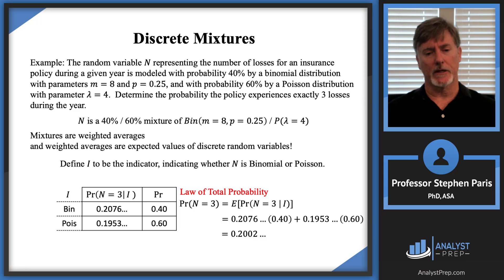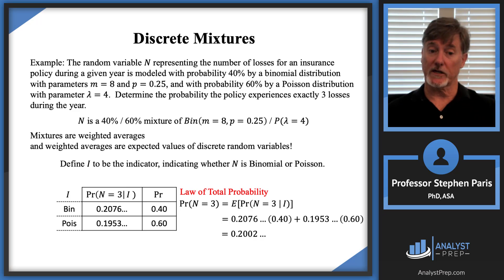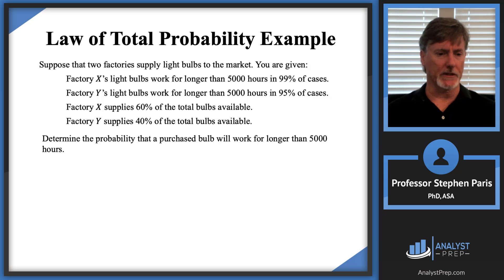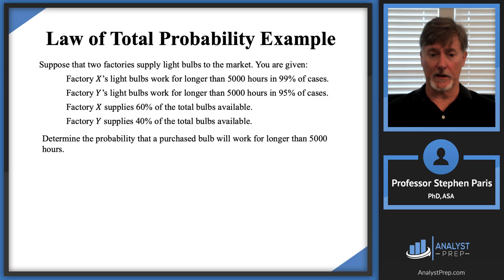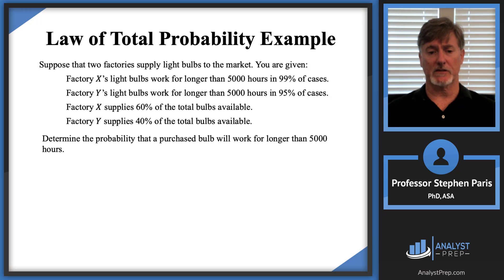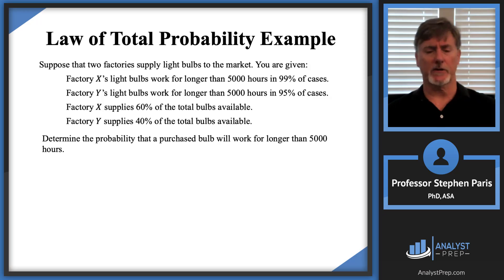I want to illustrate that the law of total probability is just an application of total expectation. Let's look at the light bulb example I used when discussing the law of total probability. Two factories supply light bulbs: Factory X has bulbs lasting longer than 5000 hours in 99% of cases; Factory Y in 95% of cases. Factory X supplies 60% and Factory Y supplies 40%. We randomly choose a bulb and ask: what's the probability it lasts longer than 5000 hours?